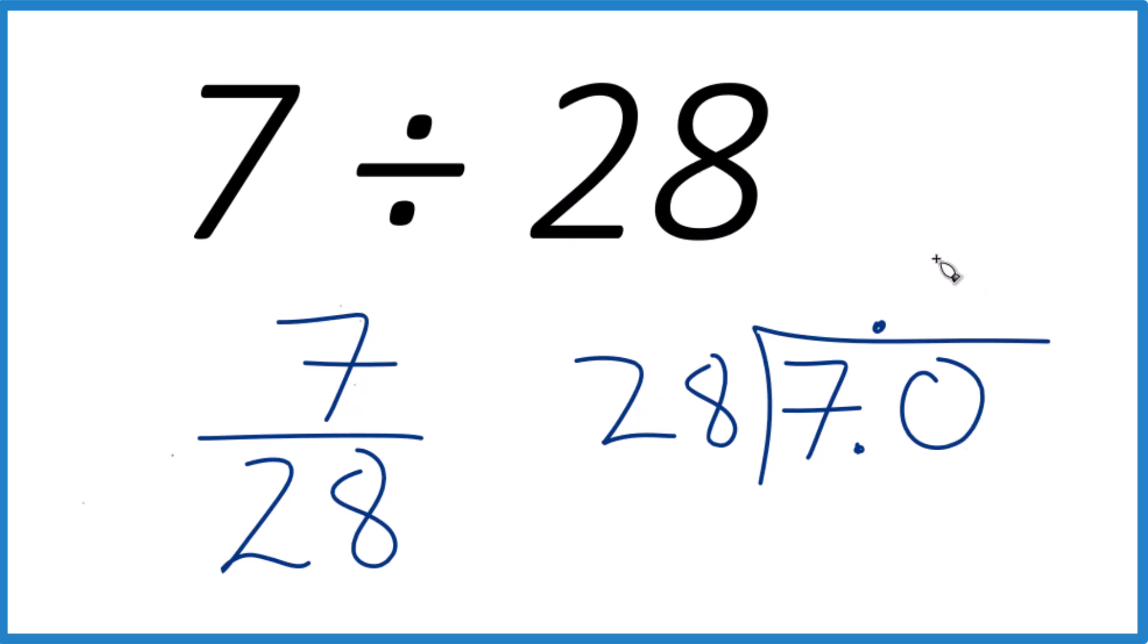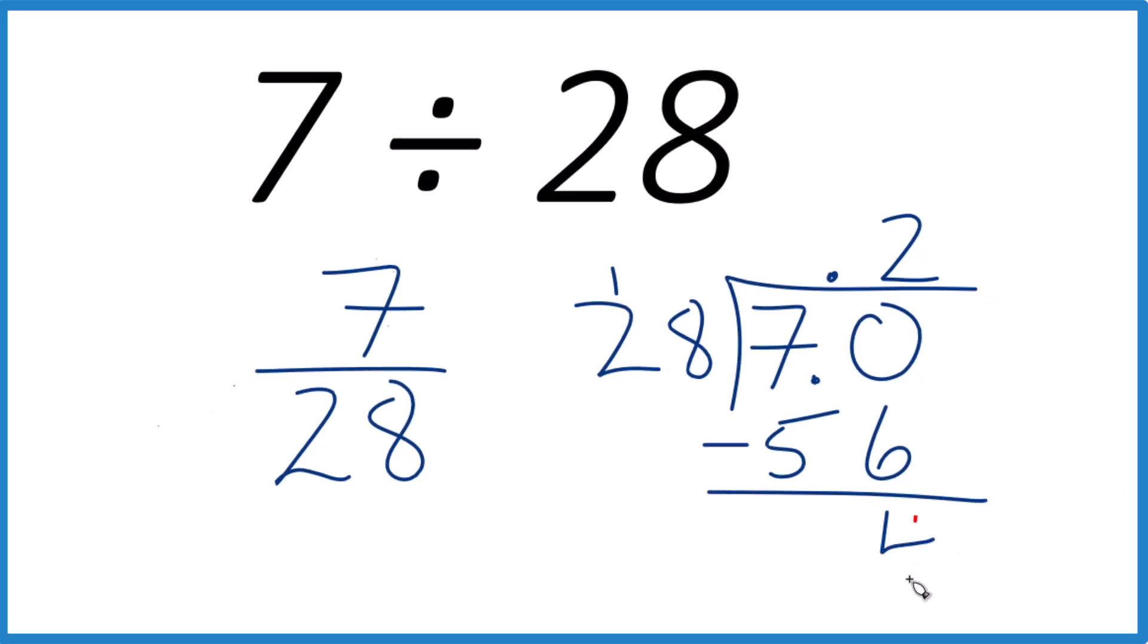So 28 goes into 70, maybe 2 times. 28 times 2 would be 56. If you subtract, you would get 14.